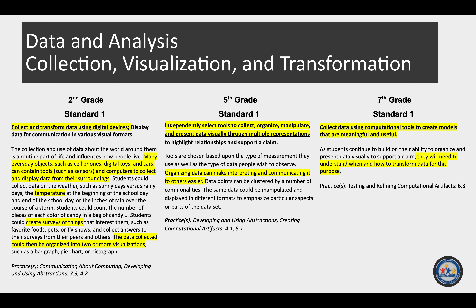This shows the progression of the sub-concept collection, visualization, and transformation within the essential concept of data analysis. This progression is an example from second grade to fifth grade to seventh grade. A second grader collects, transforms, and displays data using digital devices — for example, collecting data about the weather or favorite activities and creating a chart or graph. Fifth grade students independently collect, organize, manipulate, and present data visually through multiple representations to highlight a claim. In seventh grade, students collect data using computational tools to create models that are meaningful and useful, such as to visually support a claim.